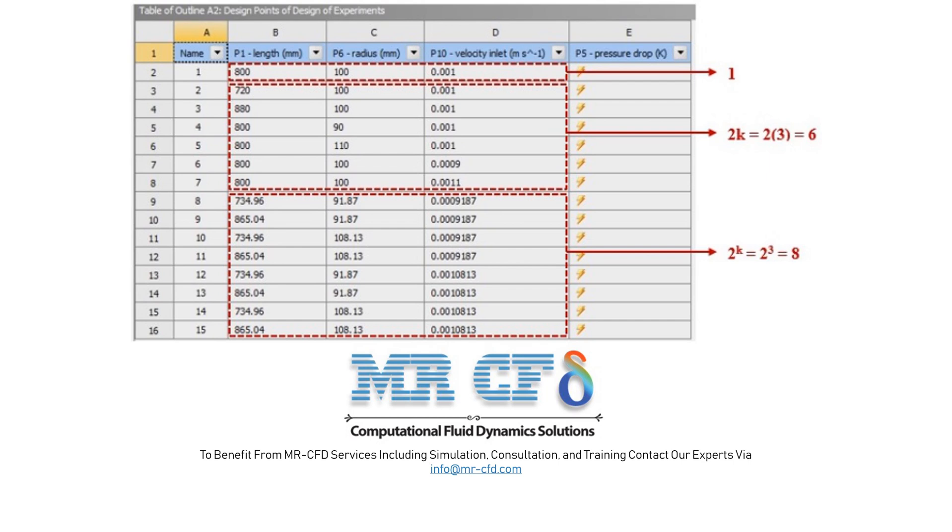Therefore, the maximum and minimum points of each interval are equal to the levels of plus alpha and minus alpha. The central points of each interval are equal to the levels of zero, and the values between these intermediate levels and the maximum or minimum levels are equal to the levels of positive 1 and negative 1.